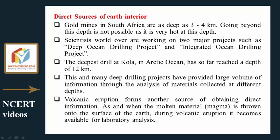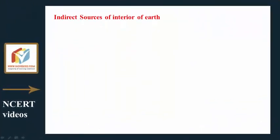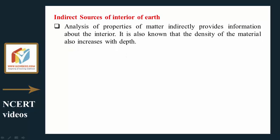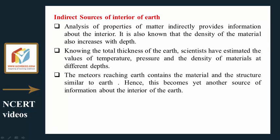Volcanic eruption forms another source of direct information. When molten material — magma — is thrown onto the surface during volcanic eruption, it becomes available for laboratory analysis. Indirect sources include the analysis of properties of matter, density increases with depth, temperature, pressure estimates, and meteors reaching earth, which contain material and structure similar to earth. Other indirect sources include gravitation, magnetic field, and seismic activity.